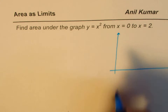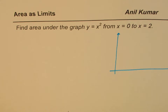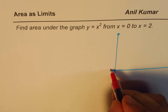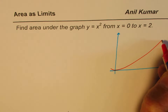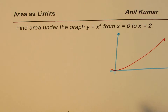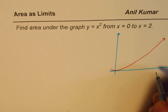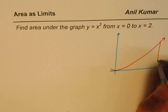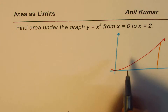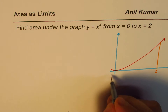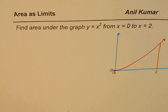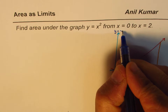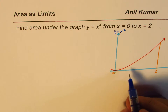I will draw the graph y = x², which looks like this. The upper boundary value is 2, so we go from x = 0 to x = 2. That is the graph y = x², and we will divide this region into n intervals.